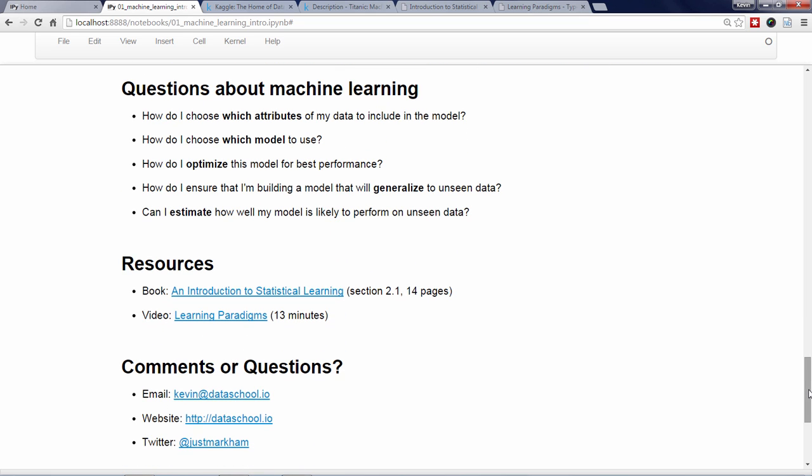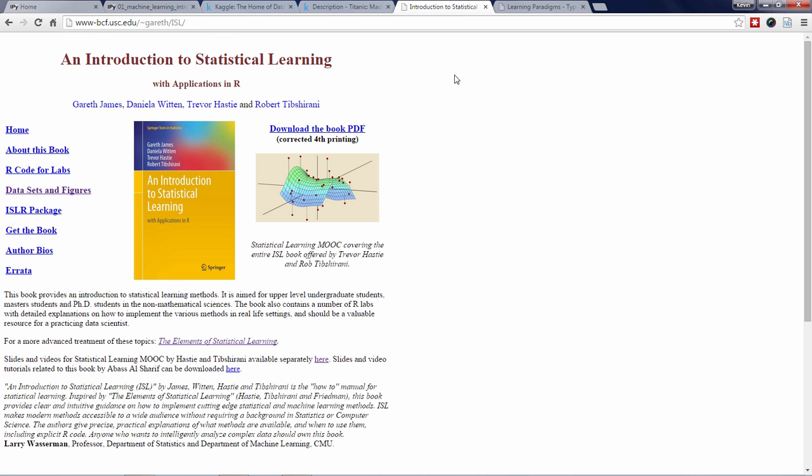If you'd like a more in-depth introduction to machine learning, there are two resources that I recommend that I've linked to below the video. The first resource is my favorite book on machine learning, An Introduction to Statistical Learning by Trevor Hastie and Rob Tibshirani. It's available as a free PDF download, and Section 2.1 introduces machine learning in a thorough yet accessible way.